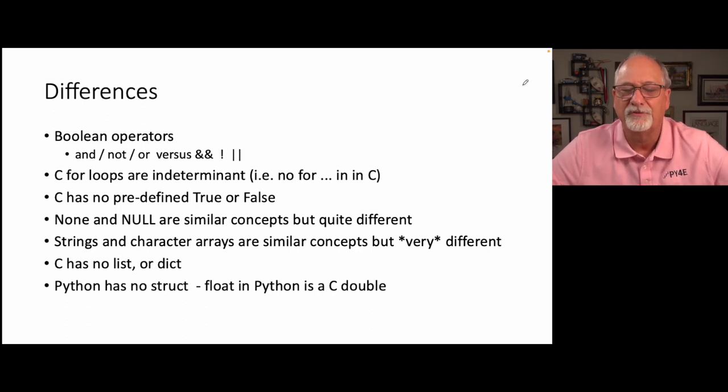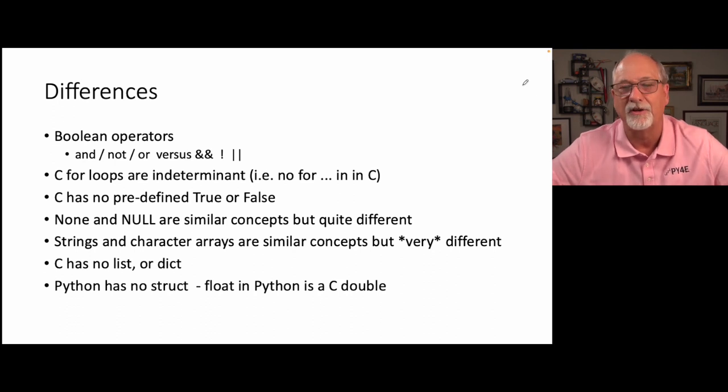There's no predefined true and false in C — though they do have EOF, capital EOF, for end of file. None and null are similar concepts but quite different. None in Python is its own type; null in C is the number zero cast to be a pointer to nothing. None is specially marked empty; null is a zero. We'll get there.